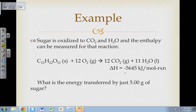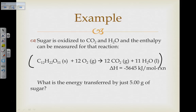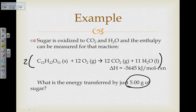It stands to reason that if we have five grams we can figure out how much heat is going to be given off. If we double the reaction, the delta H doubles. So all we have to do is determine how many moles five grams is and then multiply. In the end, this is just a unit conversion problem.